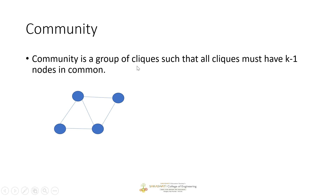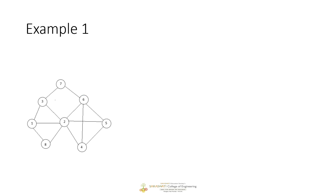Let's try to understand this with the given diagram. How many cliques of value k equal to 3 can we find? A clique with k equal to 3 has three nodes all connected — node 1, node 2, node 3 — making the first clique. We can find one more clique with three other connected nodes. So in this network structure we have two cliques. These two cliques form a community because they have two nodes in common.